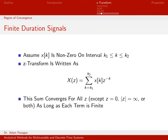Since we're talking about finite duration signals, the signal X of K — this discrete time signal — we're going to assume it's non-zero on some arbitrary interval on the discrete time axis. Over the region K1 to K2, X of K is non-zero, and outside of this — for all K greater than K2 and all K less than K1 — it equals zero. This is the only portion on the time axis where it's possibly non-zero.